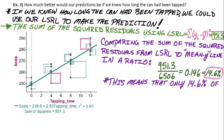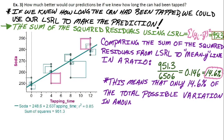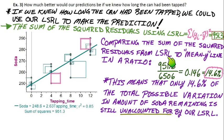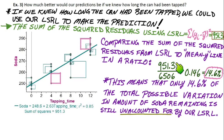So 14.6% means that only 14.6% of the total possible variation in the amount of soda remaining is still unaccounted for by our LSRL. If we got 0 for the sum of squares in the numerator, that would basically be a perfect line — we would have accounted for all the possible variation. But it's never really perfect, though it is substantially smaller than if we just guessed the mean.